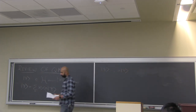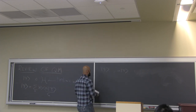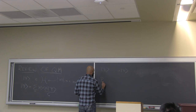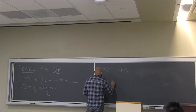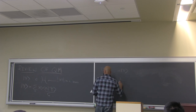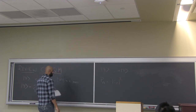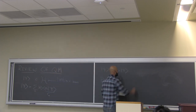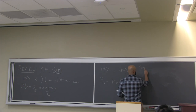The probability — this is the famous Born rule — of finding the system in the state |n⟩ is simply |c_n|² . This immediately gives rise to superpositions and interference.